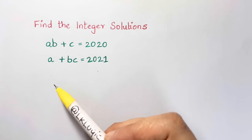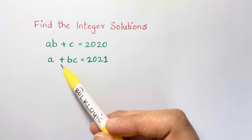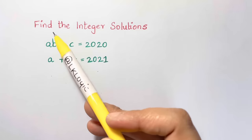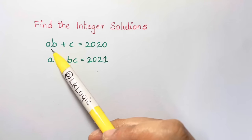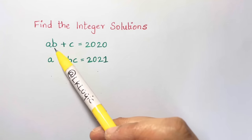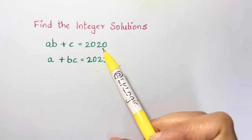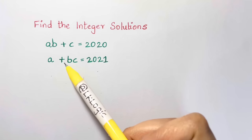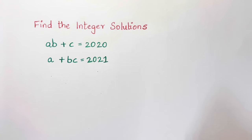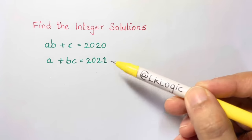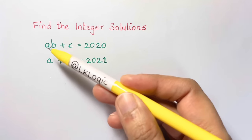Hi guys, here we have another math olympiad question which says: find the integer solutions for 'ab + c = 2020' and 'a + bc = 2021'. Usually we have done equations with two variables, but here we have two equations with three variables.